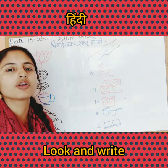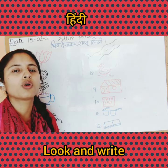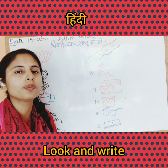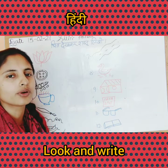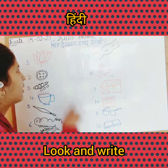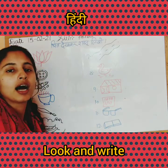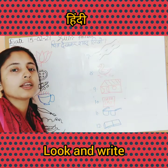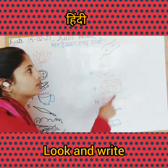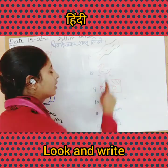Everyone take out your Hindi notebook, open a new page, and write down today's date: 1550.02.21. After writing the date, you will put CW on the top.